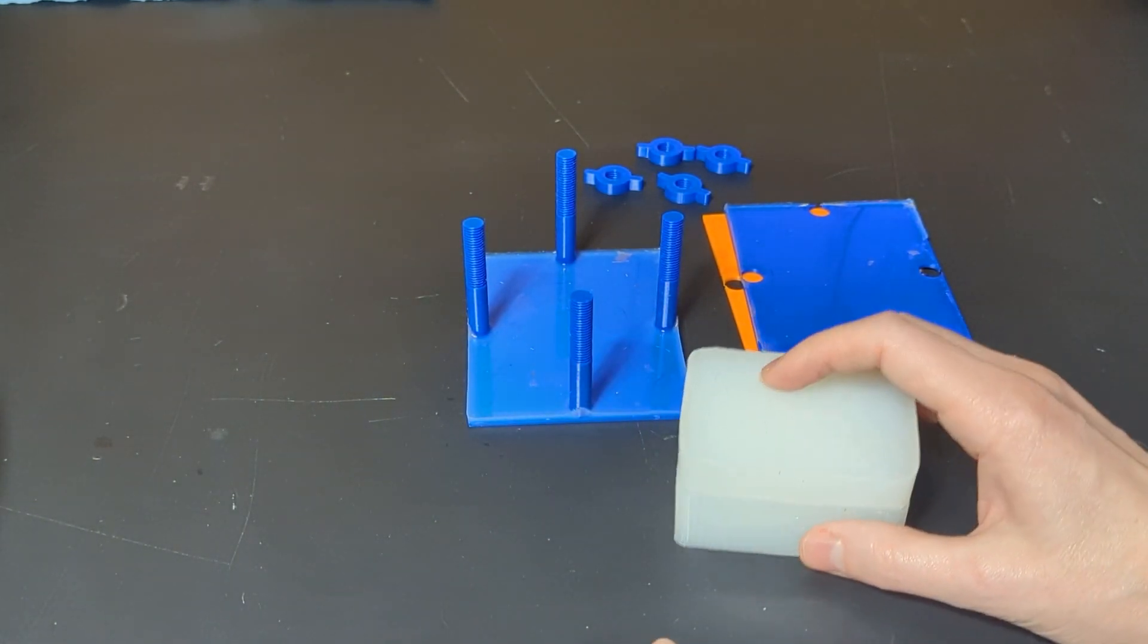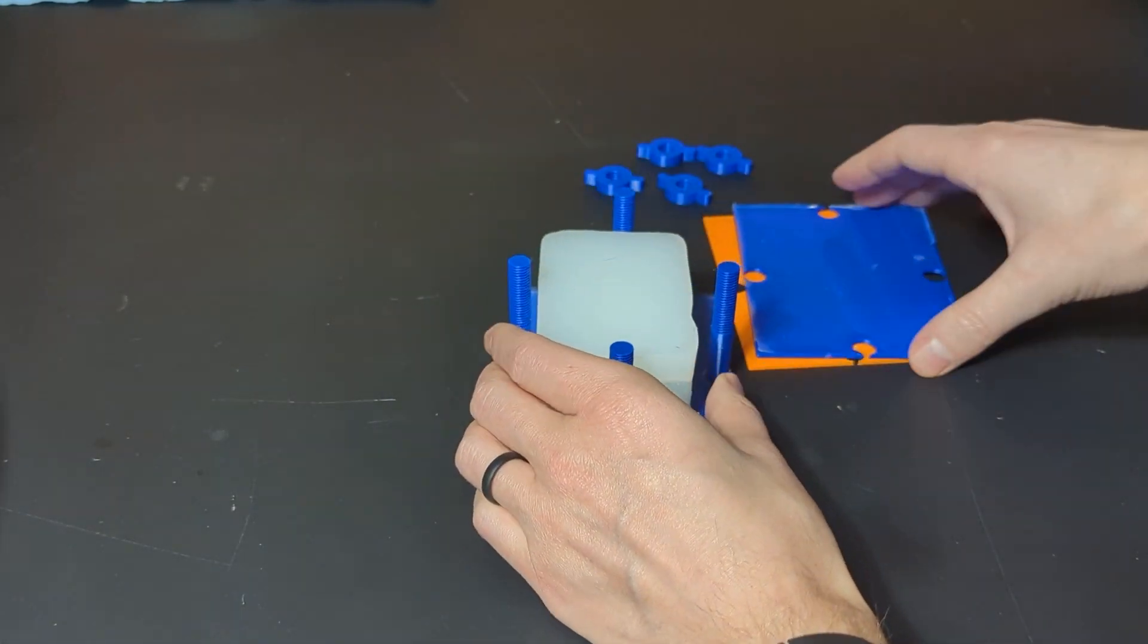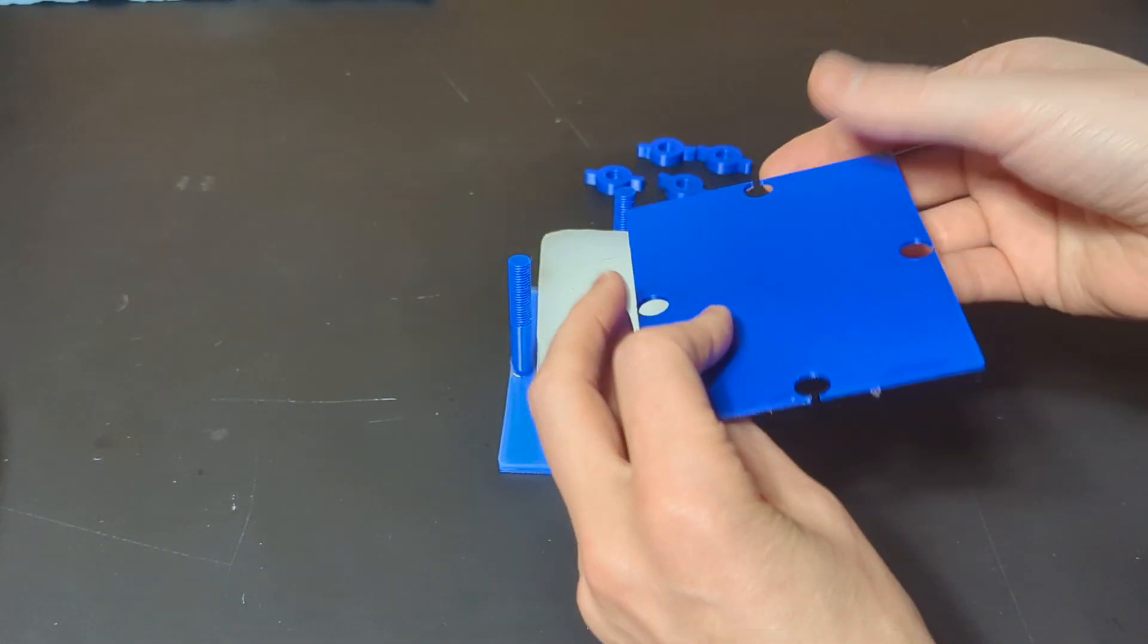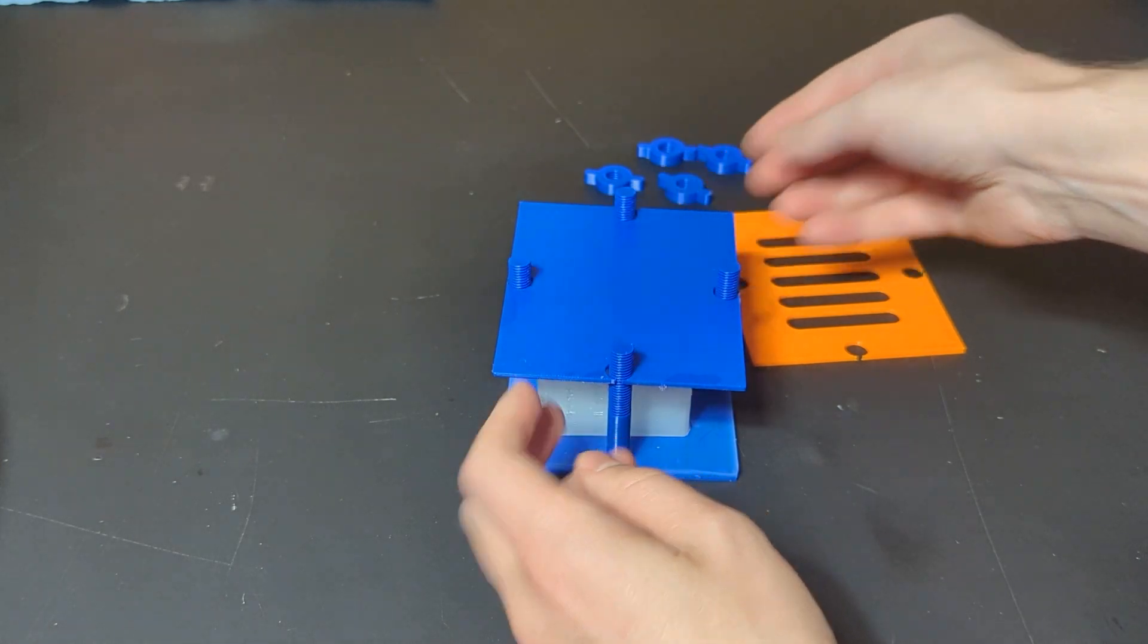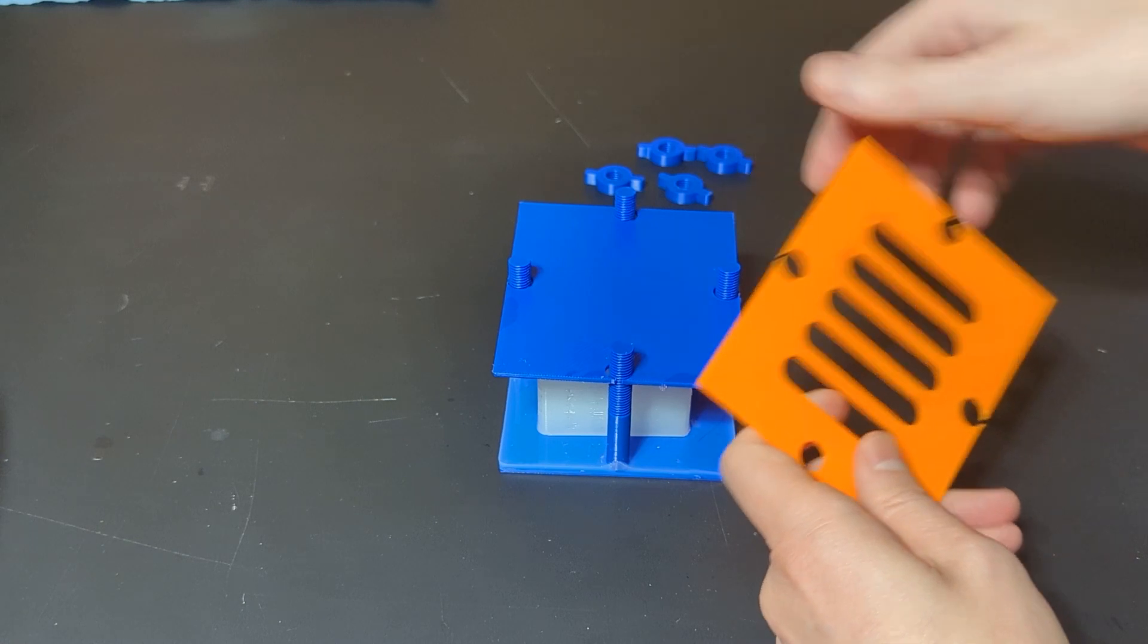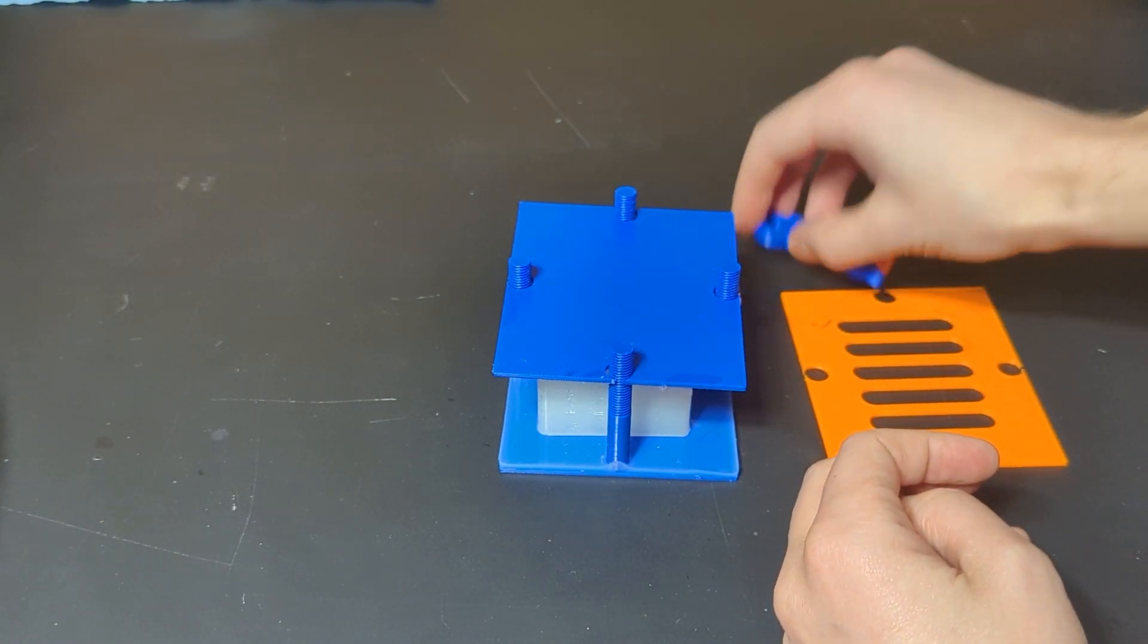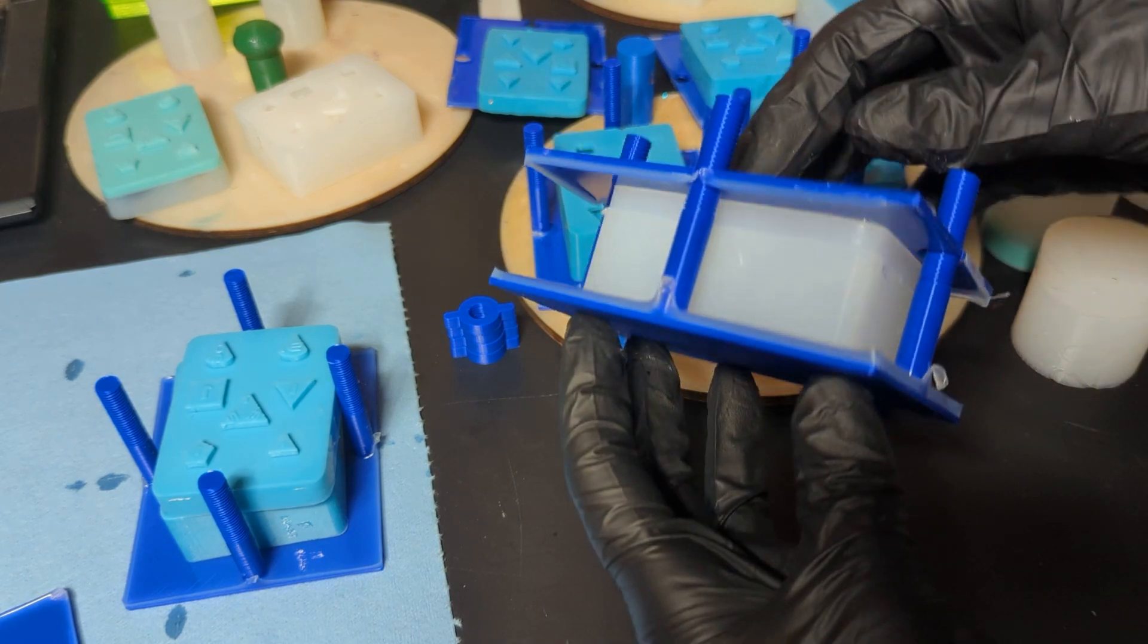To make that easier I have this press where you can put your mold in there and then you can put a plate on it. I have two different kinds: a normal one or one with slots if you happen to have sprues at the top that you need the resin to go through, and then just some wing nuts.